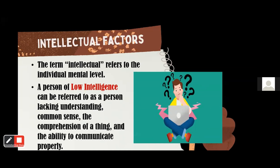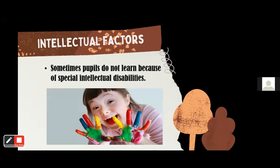A person of low intelligence can be referred to as a person lacking understanding, common sense, comprehension, and the ability to communicate properly. Low intelligence students have learning issues — they tend to learn slower and are sometimes unable to retain what they have learned or apply concepts in different situations without help. Students with low intelligence must be taught directly, as they find it difficult to express themselves verbally and cannot articulate easily. They need someone who can guide them in their learning. Sometimes pupils do not learn because of special intellectual disabilities, making it really hard for them to catch up. Their ability to learn is limited, yet they can and do learn new skills — just more slowly.